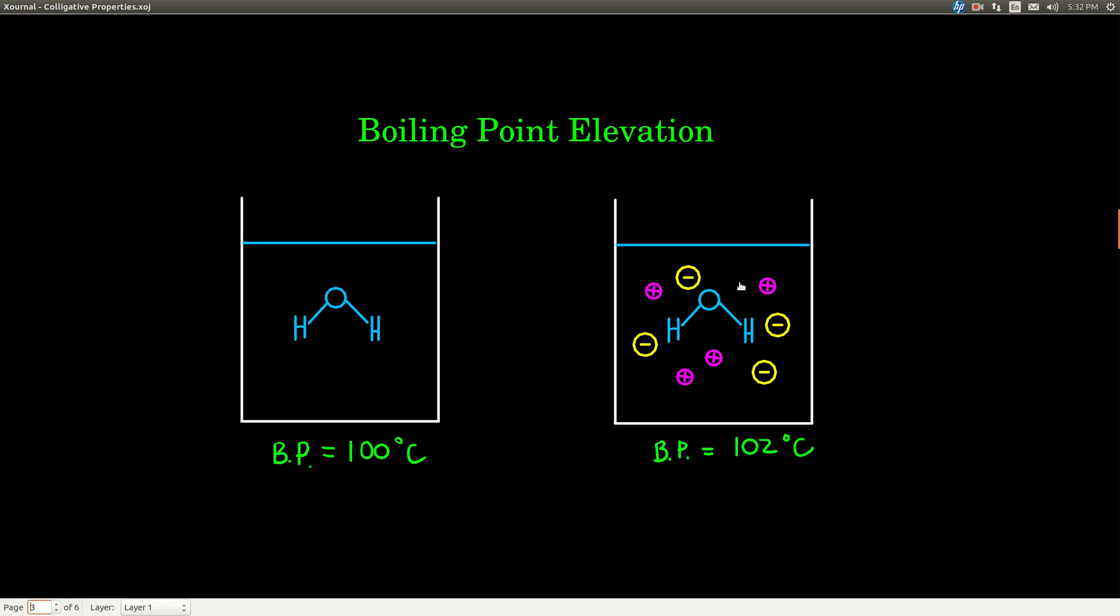All that matters is how many particles there are. And this changes the boiling point. It raises it. It always elevates it or raises it. So maybe it goes up to 102 degrees Celsius. How high it goes depends upon one thing and one thing only, and that is how many particles there are that are dissolved in that particular solution. The more particles that are dissolved, the higher the boiling point goes.